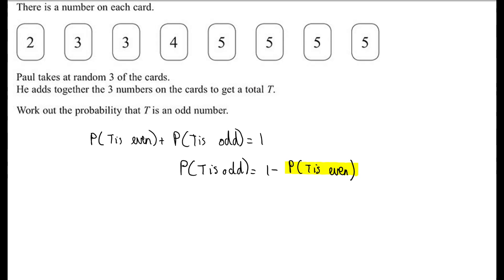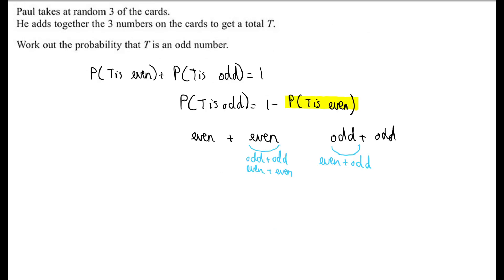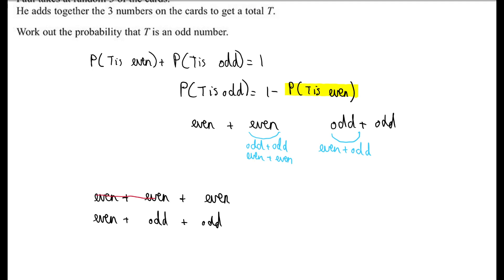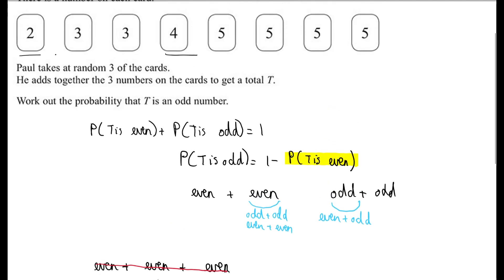Whenever we add two numbers to get an even result, we can either be adding even plus even, or odd plus odd. To get an odd number from two numbers, we need even plus odd. Combining this for three numbers gives us two possibilities where t is even: either even plus even plus even, or even plus odd plus odd. However, we only have two even numbers — 2 and 4 — so we can rule out even plus even plus even. So we only need to consider the case of two odds and one even.